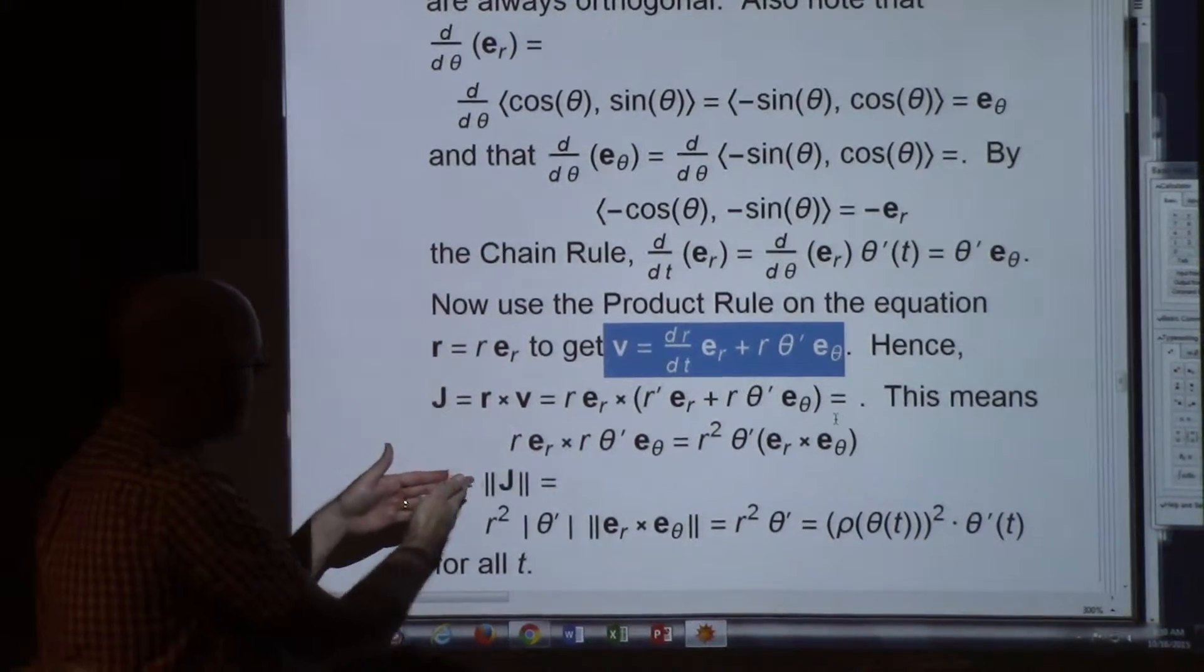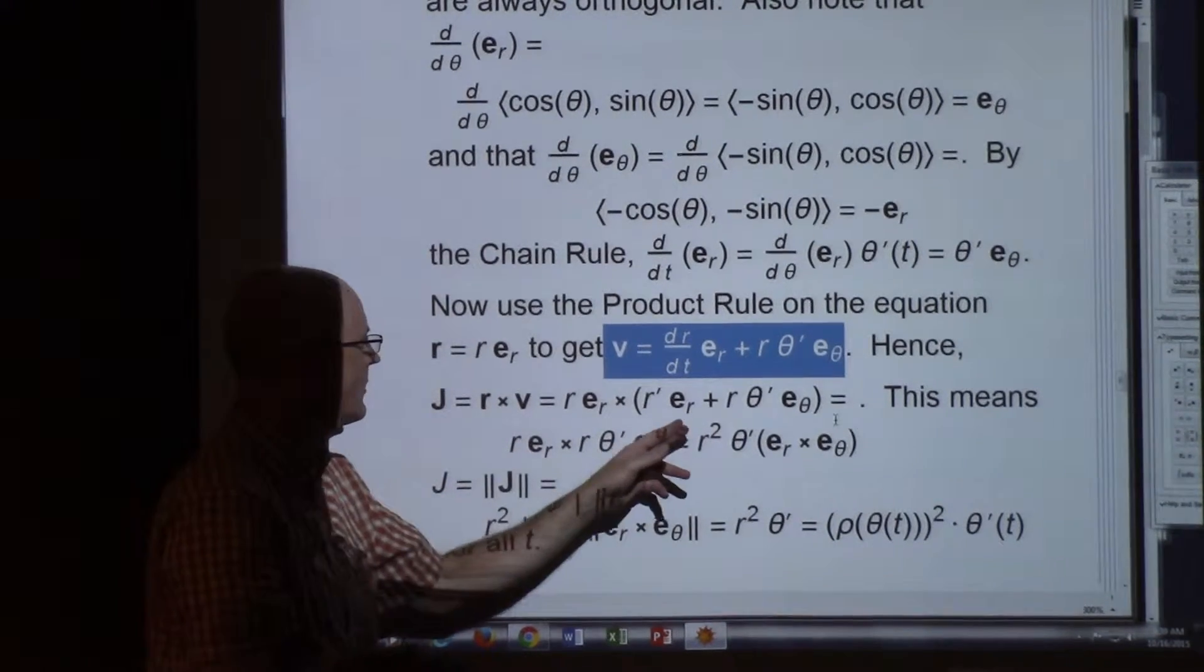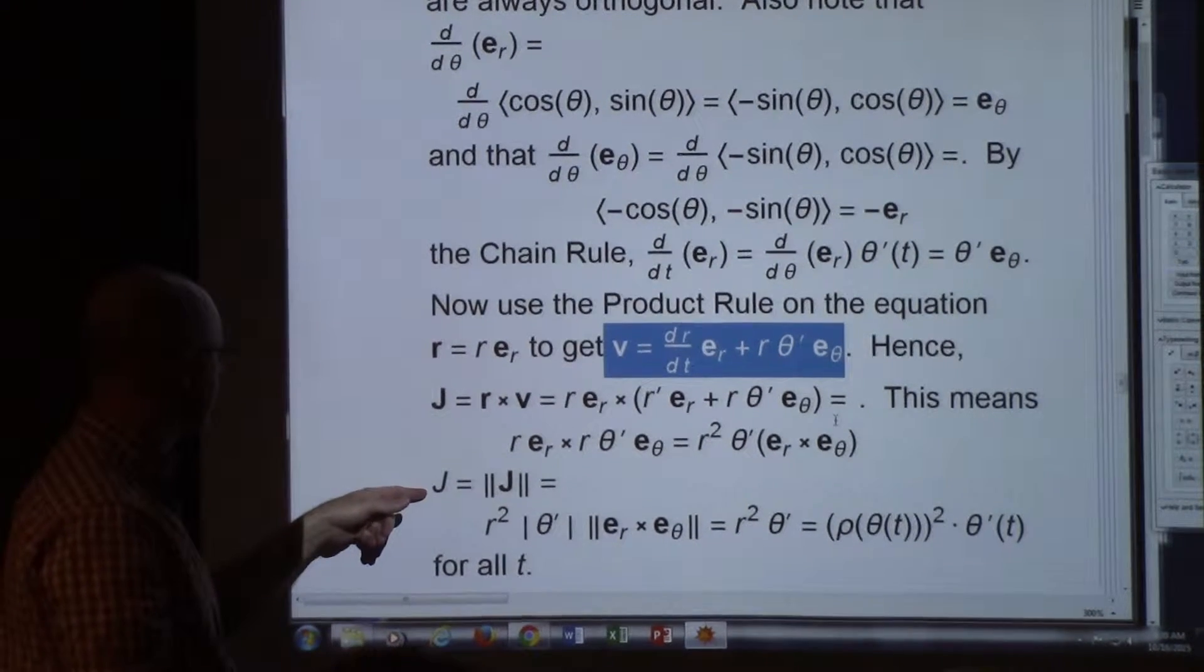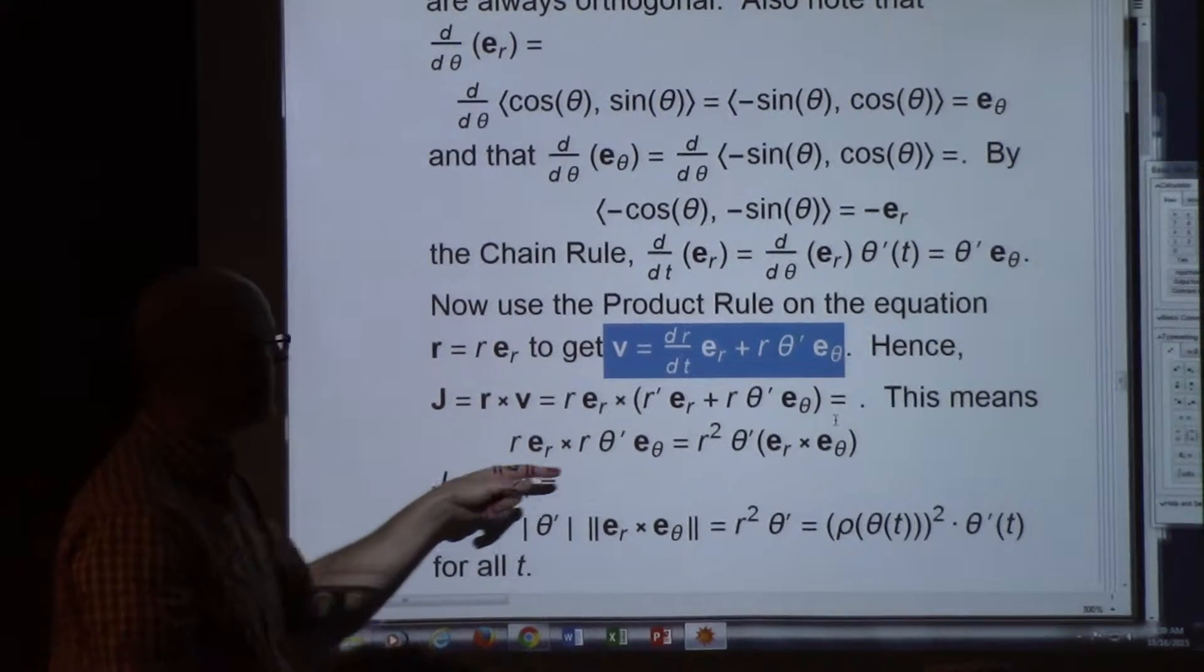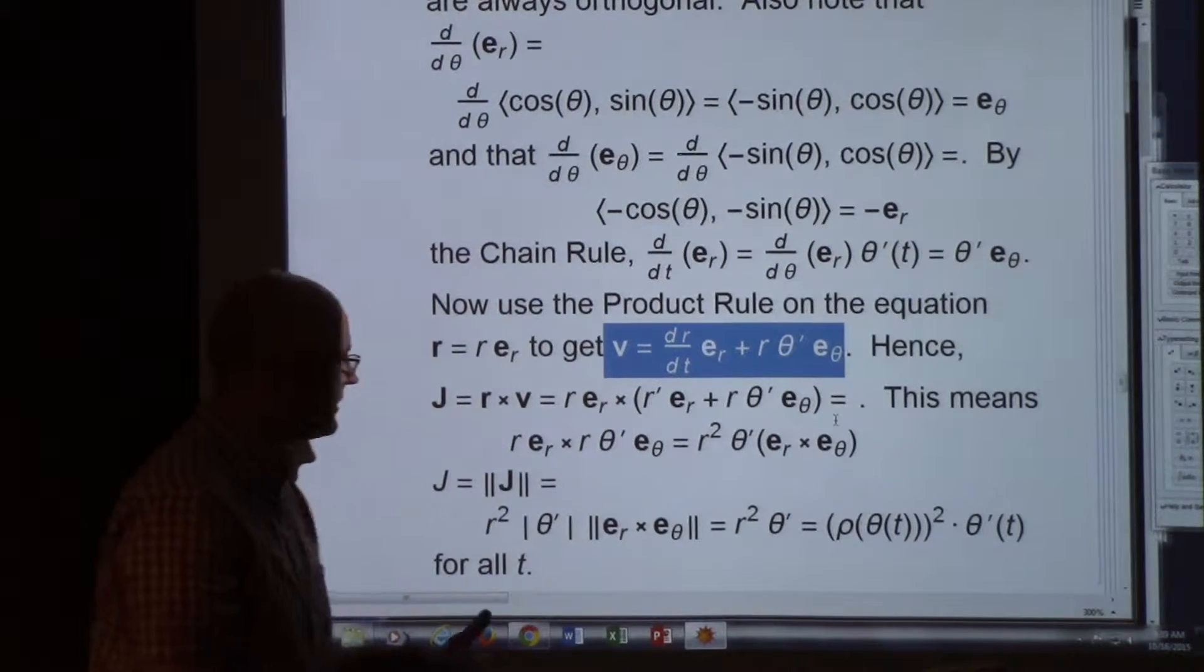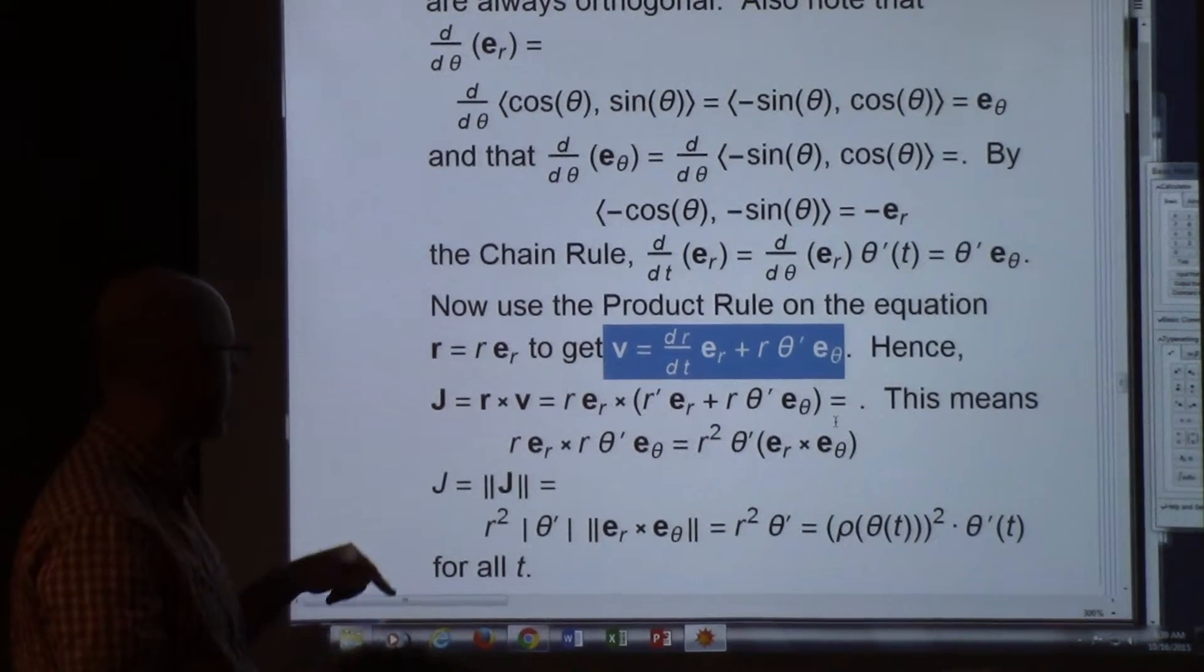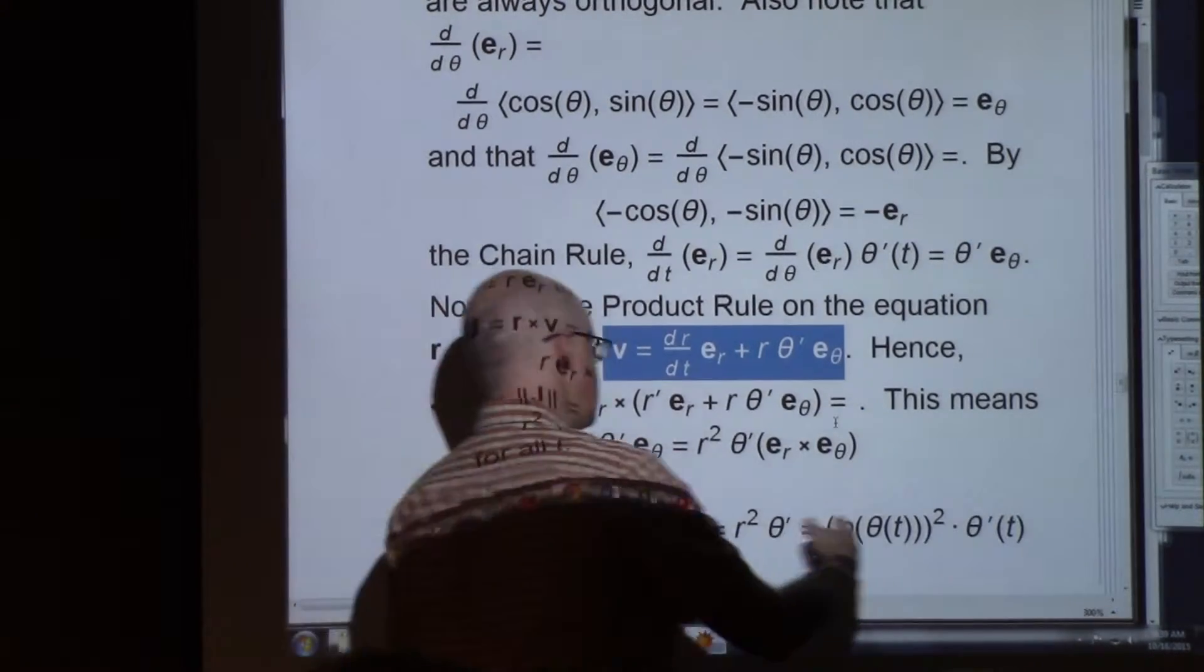The scalars can be factored out. The R's can combine to an R squared and the theta prime can be factored out. We've got R squared theta prime times this vector. The length of that vector, the J without a vector symbol, the J that's not bold-faced, can be calculated as the length of this. Since ER and E theta are unit vectors, it turns out the cross product is also a unit vector and has length one. And so scalar J ends up equaling R squared theta prime for all T.